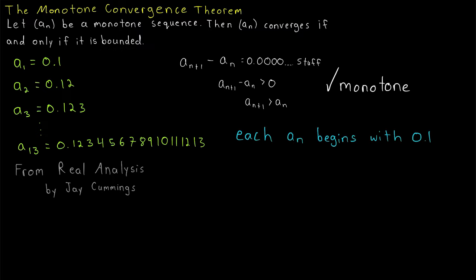Well, certainly it is, because each term a_n from this sequence begins with 0.1. In other words, every term is certainly less than the whole number 1. So again, since each term of the sequence begins with zero whole units and one tenth, certainly each term of the sequence is less than 1. So by definition, the sequence is bounded.